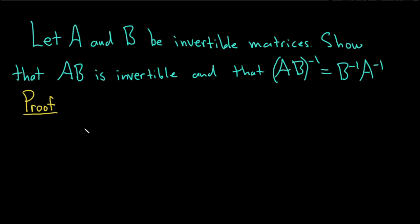OK, so let's go ahead and go through it. So what we have to show is the following. So we need to show that this is the inverse of AB. So we have to show that if we multiply AB on the left by B inverse A inverse, we end up with the identity matrix.